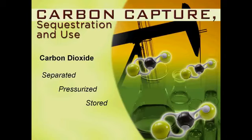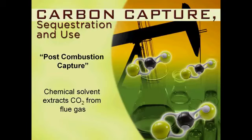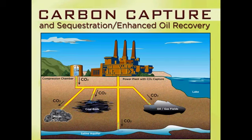Carbon capture and sequestration, or CCS, involve separating, pressurizing, and storing carbon dioxide from fossil fuel use. The CCS method closest to implementation is post-combustion capture, which can be applied to existing pulverized coal combustion power plants. After coal is burned to generate electricity, a chemical solvent is used to extract carbon dioxide from the flue gas. The cleaned flue gas can then be released into the atmosphere. The captured CO2 may then be pressurized and transported. As more clean coal technologies come online, these processes will become more efficient and economical. Carbon dioxide can be stored indefinitely in geological formations including deep saline aquifers and depleted oil and natural gas reservoirs.